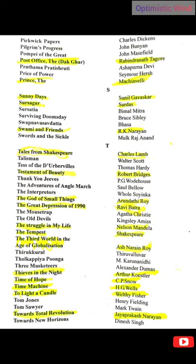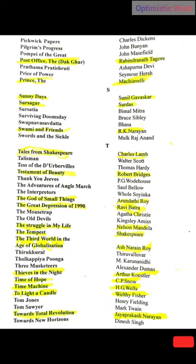The Post Office — written by Rabindranath Tagore. The Prince — written by Machiavelli, one of the philosophers of politics with many theories under political philosophy. Sunny Days — written by Sunil Gavaskar. Sursagar — by Surdas. Swami and Friends — by R.K. Narayan. Tales from Shakespeare — by Charles Lamb. Testament of Beauty — by Robert Bridges. The God of Small Things — by Arundhati Roy, a famous left-wing writer. The Great Depression of 1990 — by Ravi Batra. The Struggle in My Life — by Nelson Mandela.